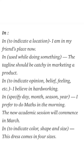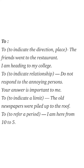आपको check करना पड़ेगा कि कौन सा sentence किस form में दिया गया है. Next we have 'to'. To भी हम अलग-अलग ways से use करते हैं. First, to indicate direction and place — किसी direction या place को indicate करने के लिए. जैसे: the friends went to the restaurant — went to, गए restaurant की तरफ.